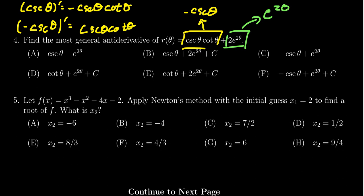So you put those things together, your antiderivative r of theta is going to look like negative cosecant theta plus e to the two theta plus a constant. Don't forget that plus constant because we need the most general antiderivative. So that would give us, as the correct answer, choice F.